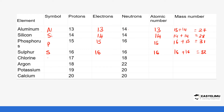Chlorine has the symbol Cl. It has 17 protons, which equal the number of electrons, also 17. The atomic number of chlorine is therefore 17. Calculating the mass number: the number of neutrons is 18 plus the number of protons which is 17, giving us 35.